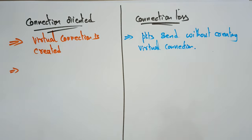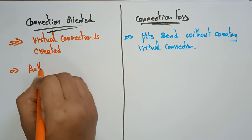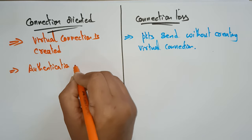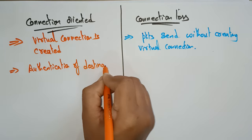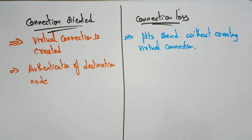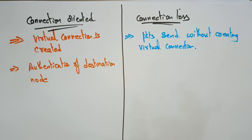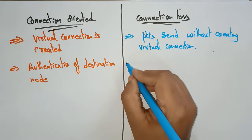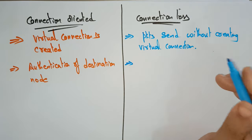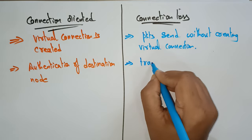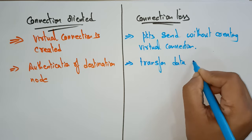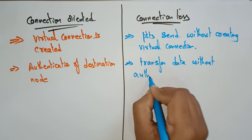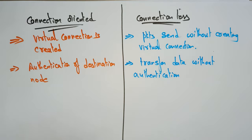Next, in connection-oriented, it needs authentication of the destination node before transferring data — it verifies whether the data is reaching the correct person. In connectionless, data is transferred without authenticating the destination. It does not check whether it is reaching the correct person or not — it simply transfers the data without authentication.